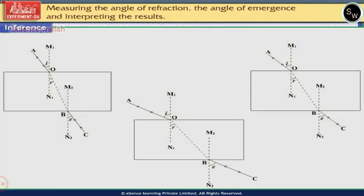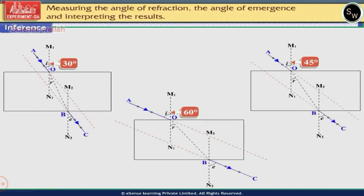The observed path of the ray for angles of incidence of 30 degrees, 45 degrees, and 60 degrees is AOBC. The incident ray AO and the emergent ray BC are parallel to each other. The lateral shift is equal to CD.